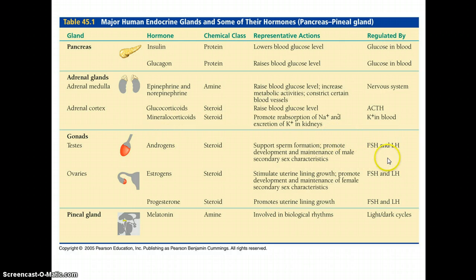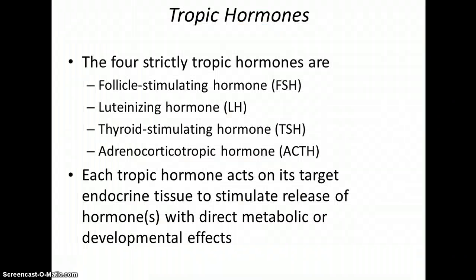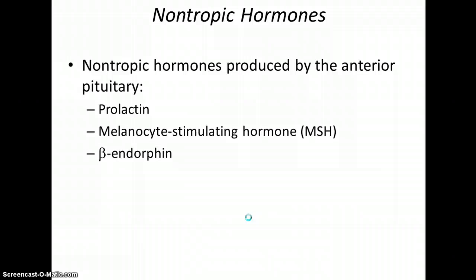The gonads — testes in males and ovaries in females — are glands that release steroid hormones and androgens, with testosterone being the primary one in the testes. They're regulated by tropic hormones from the anterior pituitary. The ovaries produce estrogens, important in the female cycle and pregnancy. The pineal gland produces melatonin, which is used to distinguish light from dark and keep our biological clock.